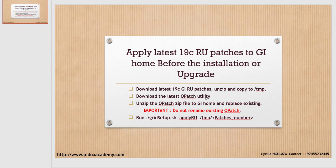As we all know, before applying any patch you need to download the latest OPatch utility and then update it in your Grid home. So here what we are doing is downloading the latest OPatch utility, and then there is a very important step here — please do not forget.